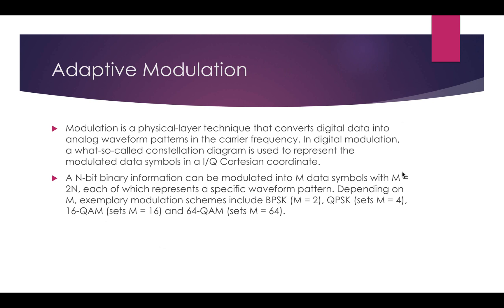Now I want to introduce adaptive modulation. Modulation is a physical layer technique that converts digital data into analog waveform patterns at the carrier frequency. The most widely used modulation in wireless systems like Wi-Fi is digital modulation, which includes phase shift keying, frequency shift keying, amplitude shift keying, and different orders like 64-QAM and 16-QAM. In my implementation, I will analyze QPSK, 16-QAM, and 64-QAM in more depth.